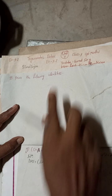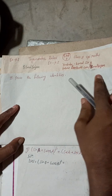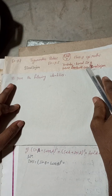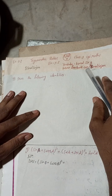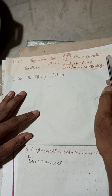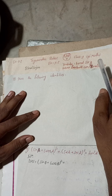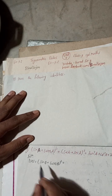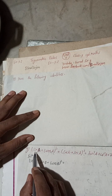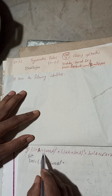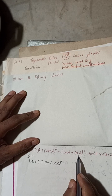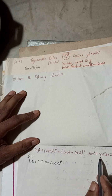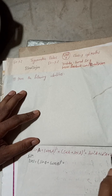Hi everybody, welcome back to Bimal Sarji's YouTube channel. This is question 9G of Exercise 9.2, Trigonometric Ratios, Class 9 Optional Math. The question is: (sin A + cosec A) whole square plus (cos A + sec A) whole square is equal to tan² A + cot² A + 7.